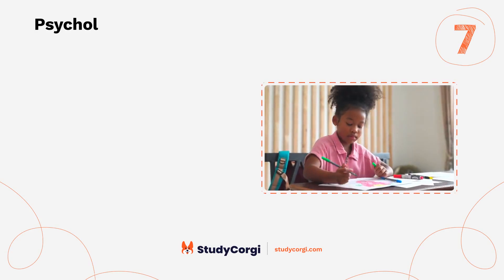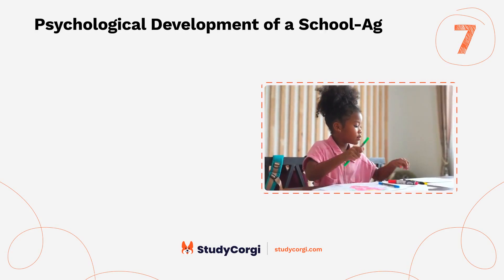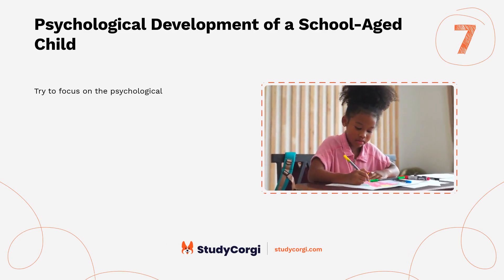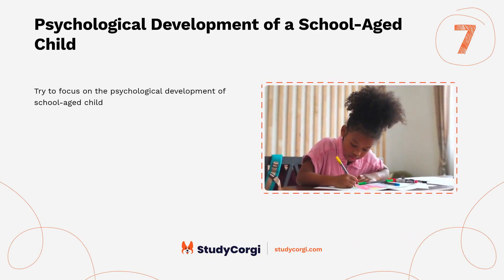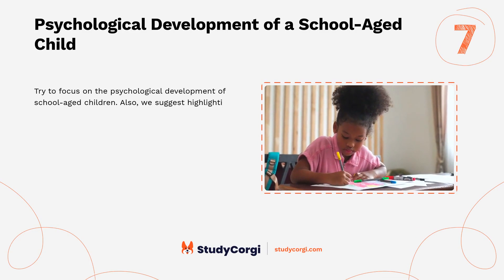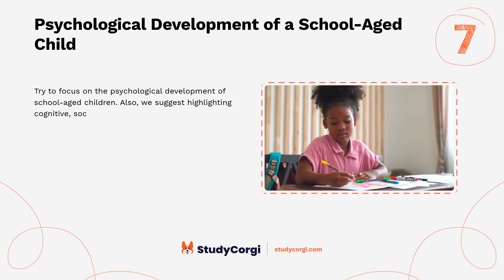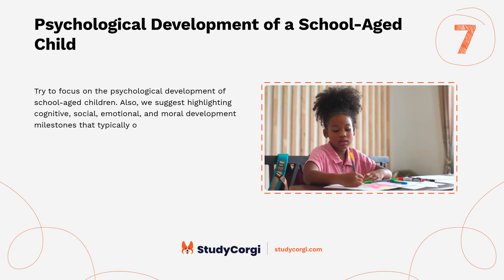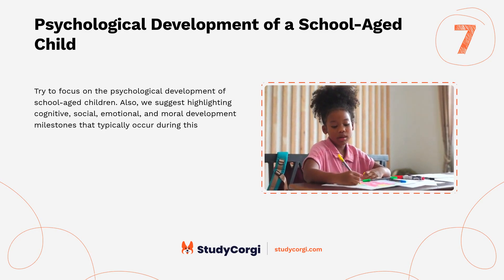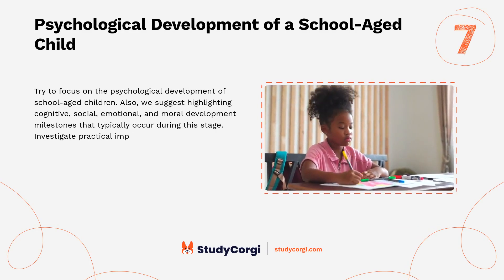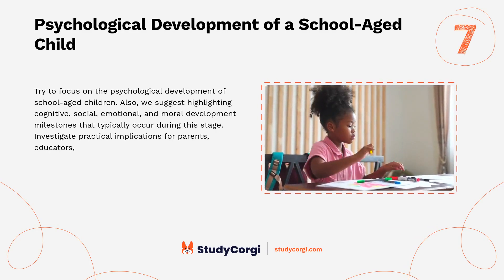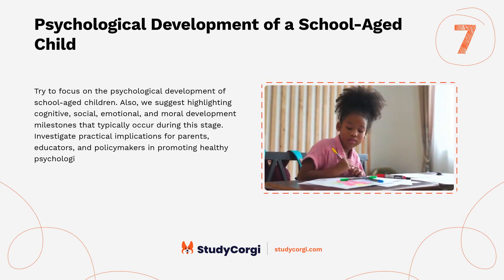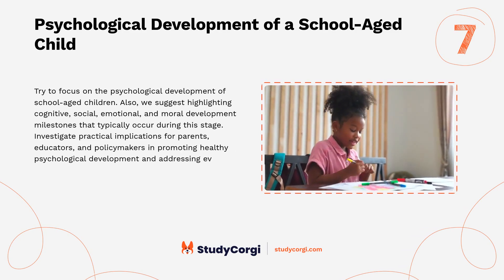Psychological development of a school-aged child. Try to focus on the psychological development of school-aged children, highlighting cognitive, social, emotional, and moral development milestones that typically occur during this stage. Investigate practical implications for parents, educators, and policymakers in promoting healthy psychological development and addressing everyday challenges.